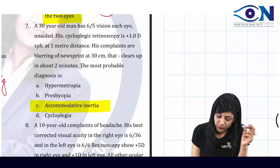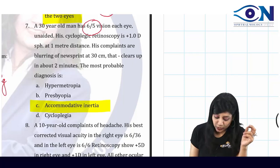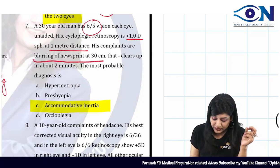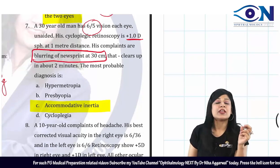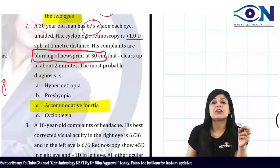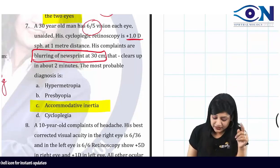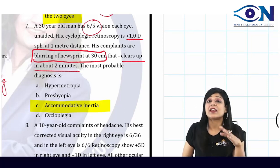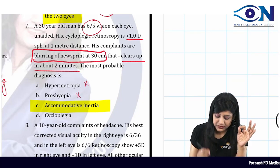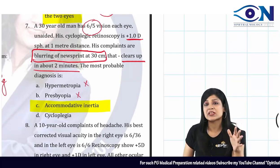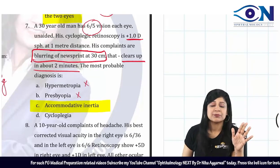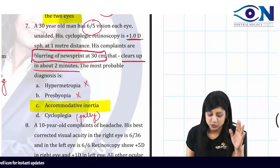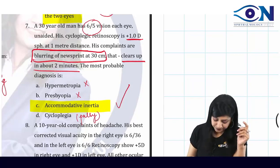Question 7: A 30-year-old man with vision 6/5, cycloplegic retinoscopy plus 1 diopter at 1 meter, complains of blurring of newsprint at 30 cm that clears up in two minutes. Since it clears by itself, it cannot be hypermetropia or presbyopia — those do not self-resolve. It cannot be cycloplegia as palsy would not clear in two minutes. The only remaining answer is accommodative inertia.